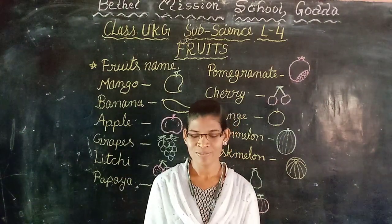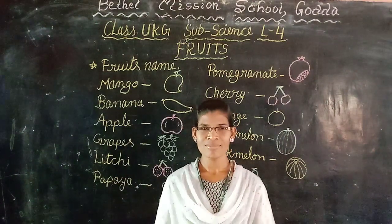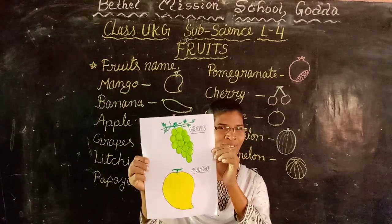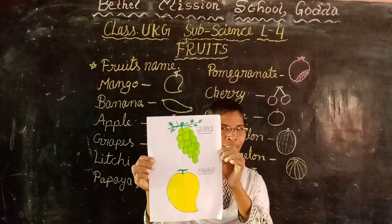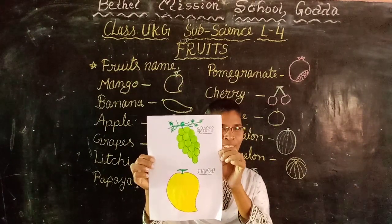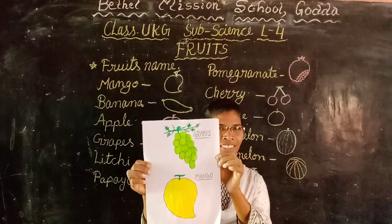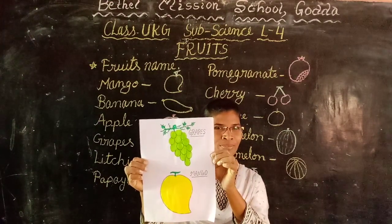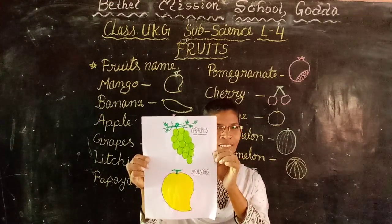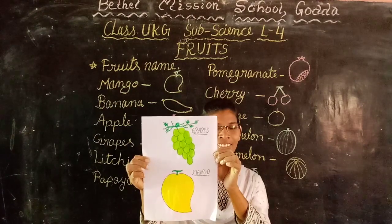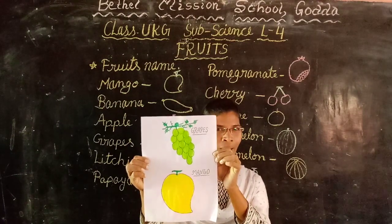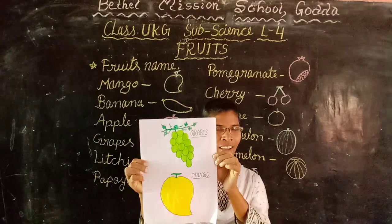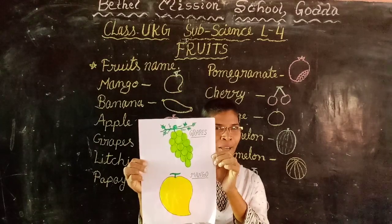Next we will see. Look at this picture. In this picture also there are two fruits. What are the fruits? Grapes and mango.